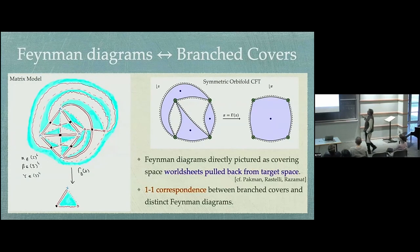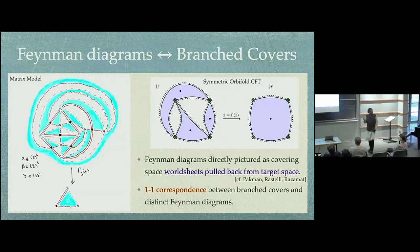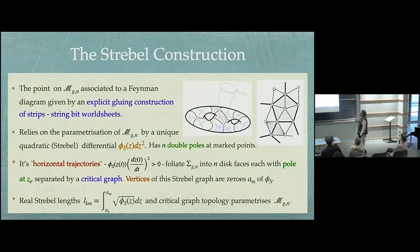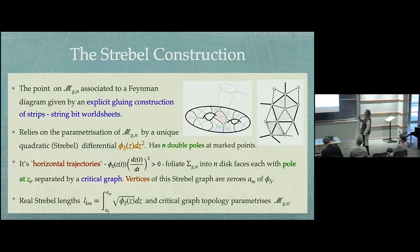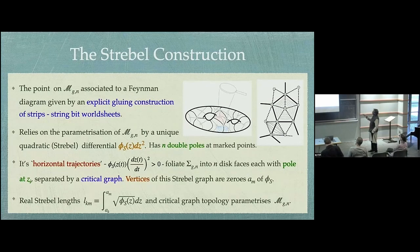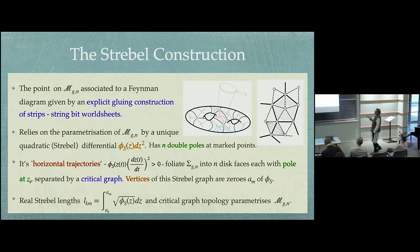There's a one-to-one correspondence between branched covers and distinct Feynman diagrams. This is mathematically very precise. You can characterize those discrete points and see how to build up the corresponding Riemann surface, which gives the explicit gluing construction in terms of the string bit worldsheets I mentioned — building up the string worldsheet from the Feynman diagrams in a very precise way by gluing together strips.